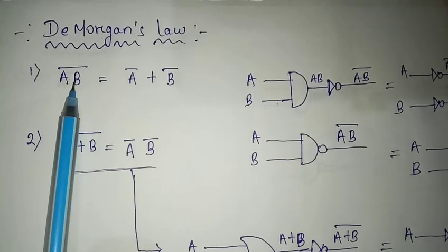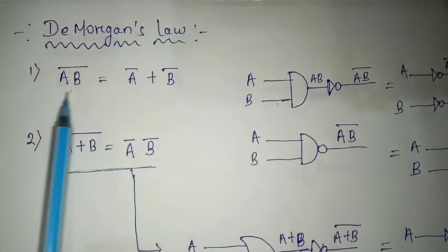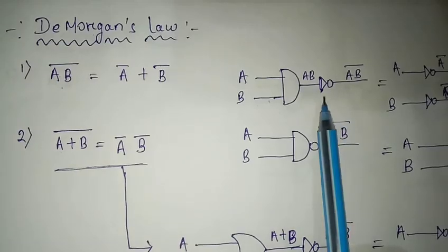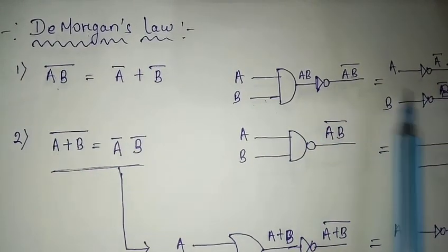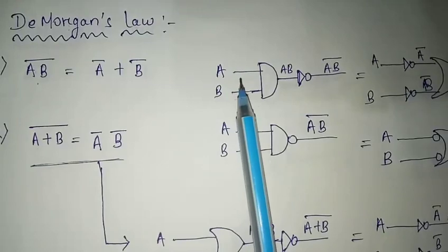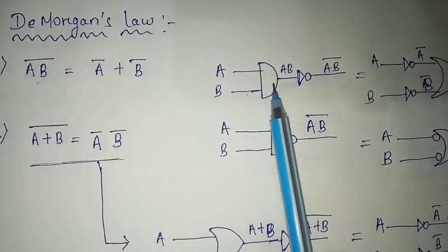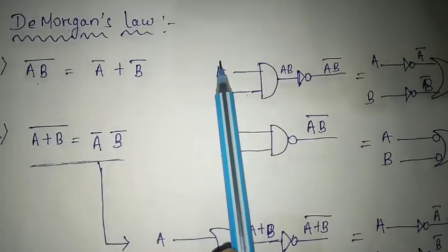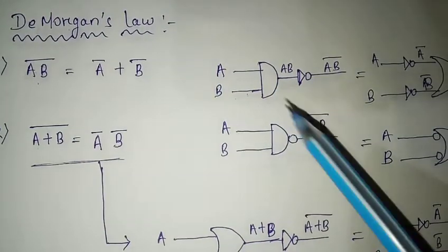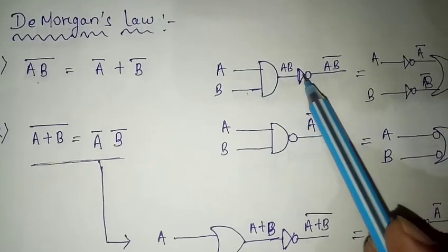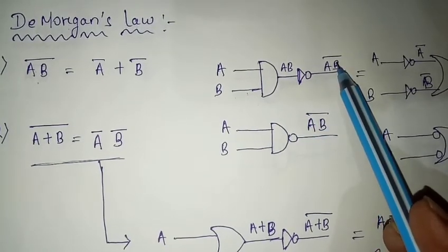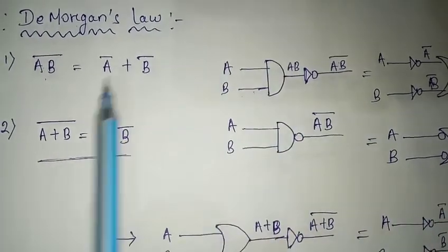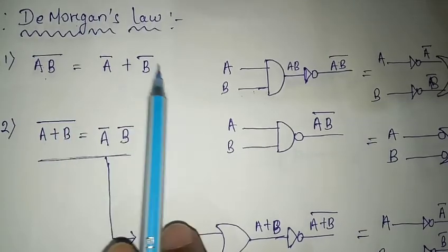We will see the expressions with gate-wise representations. This first expression can be represented gate-wise. For (A·B)̄, we take two inputs A and B through an AND gate — the expression becomes A·B — and then it passes through a NOT gate, and the expression becomes (A·B)̄. According to De Morgan's Law, (A·B)̄ = Ā + B̄.